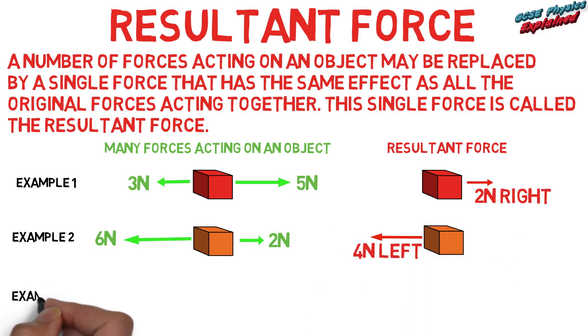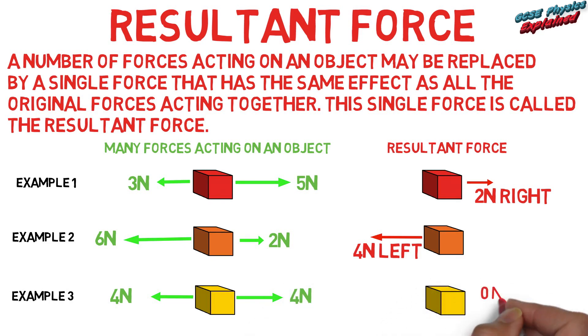Example 3: 4 newtons left, 4 newtons right. Resultant force: 0 newtons, no direction. These are vector quantities, so when we calculate the resultant force we must say what size it is and what direction it is acting in. Do you understand how I've worked out the resultant force when I knew what forces were acting on each object?